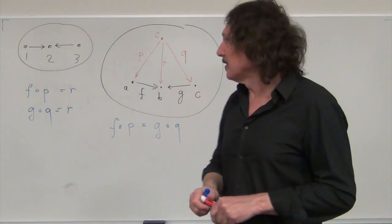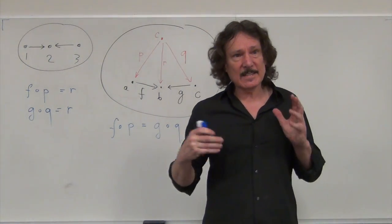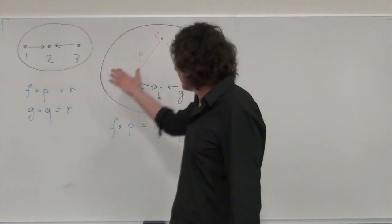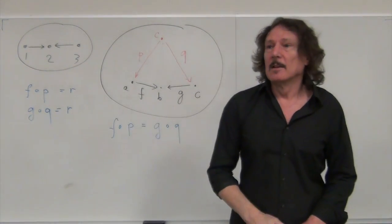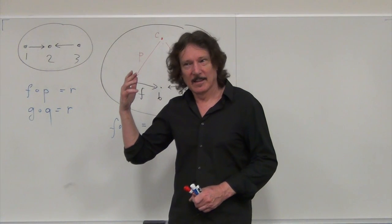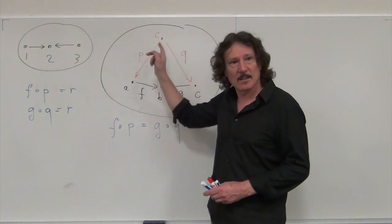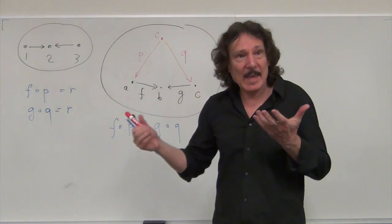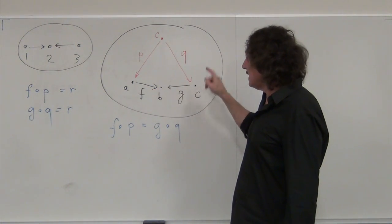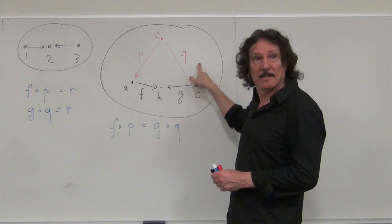This is a slightly more general equation than for the equalizer. On sets, this looks very much like a product — if it weren't for this condition it would just be a product. So in sets, this object C would be a set of pairs: one element from A, one element from C. And P would be first, Q would be second.